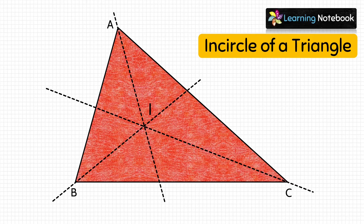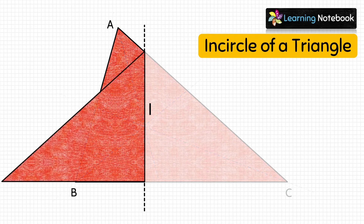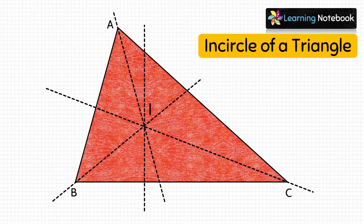Now we have to draw a perpendicular from I to side BC. For this, fold the paper along the line that passes through the point I and cuts the line BC in such a way that one part of line BC falls over the other part. Make a crease and unfold the paper. Next, mark a point D where the line of fold cuts the line BC. Then join ID.